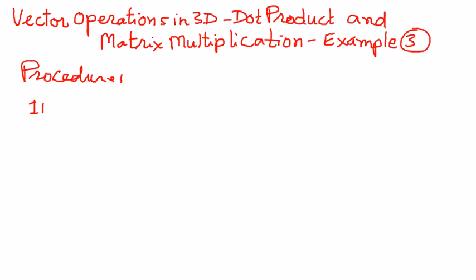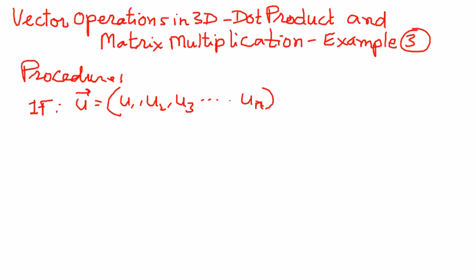If u is a vector and if the components of this vector are u1, u2, u3, all the way till un, and if v is another vector and if the components of this vector are v1, v2, v3, all the way till vn.